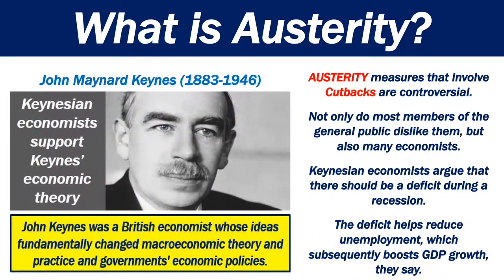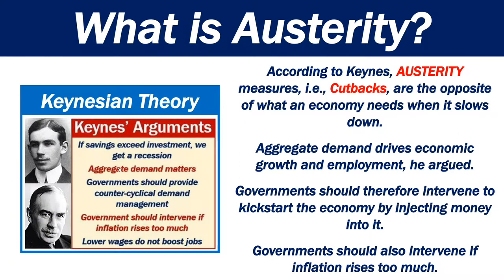Austerity measures that involve cutbacks are controversial — not only do most members of the general public dislike them, but also many economists. Keynesian economists argue that there should be a deficit during a recession. The deficit helps reduce unemployment, which subsequently boosts GDP growth. According to Keynes, austerity measures — that is, cutbacks — are the opposite of what an economy needs when it slows down.